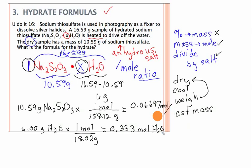And yes indeed, that is our case here. So if I divide my salt by the salt, I'm going to get one, but I have to divide the water by that as well. And I get 0.06697, and if I divide that out I get a five.